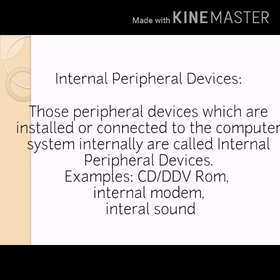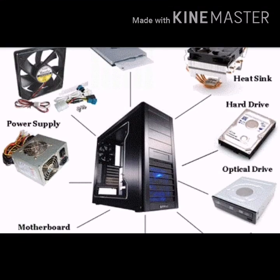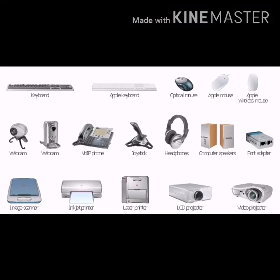Along with these, there are many other components of the computer system which are located inside the CPU box. These components are mainly used to perform data processing or power management functions. Such components are called internal peripheral devices. Examples include keyboard, printer, monitor, speaker, pen drive, and scanner.